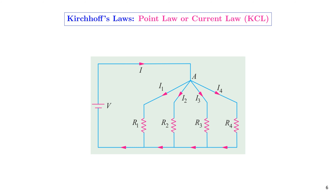Let us start with the first law, also known as the point law or current law. In this figure, I have shown a simple electrical network consisting of a voltage source V and resistors R1, R2, R3, and R4 connected in parallel.